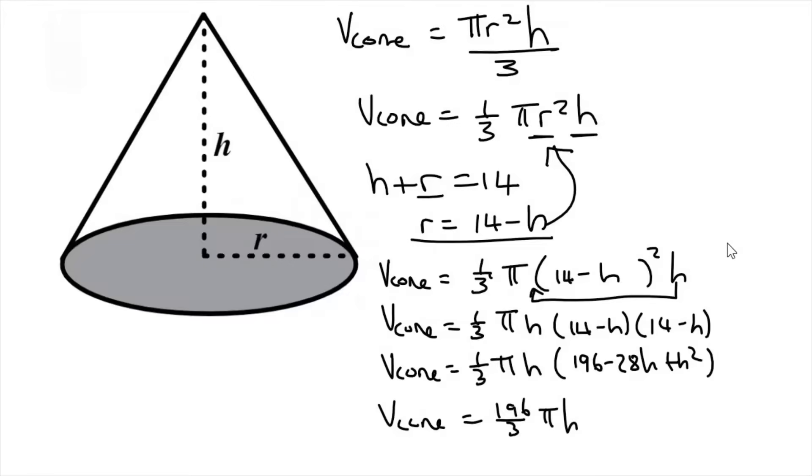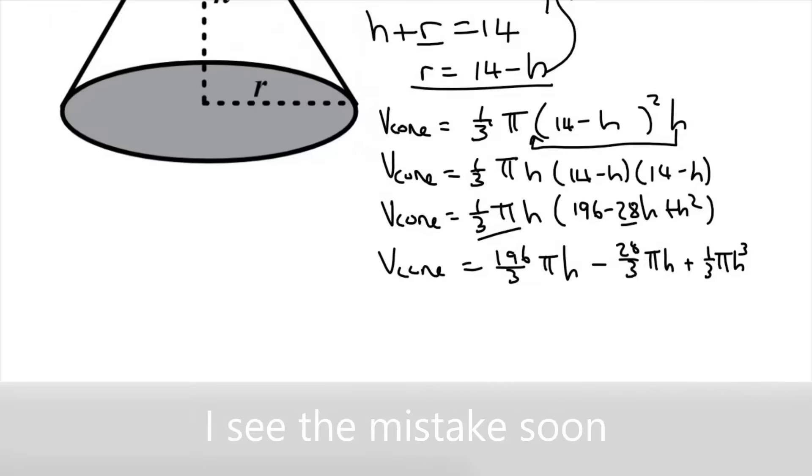You don't want to work with all these weird decimals right now. And then you can just say minus. And then it's 28 times a third pi. You can type that in on the calculator. And that's just going to give us 28 over three pi h. And then the last one will just give us a third pi h cubed.